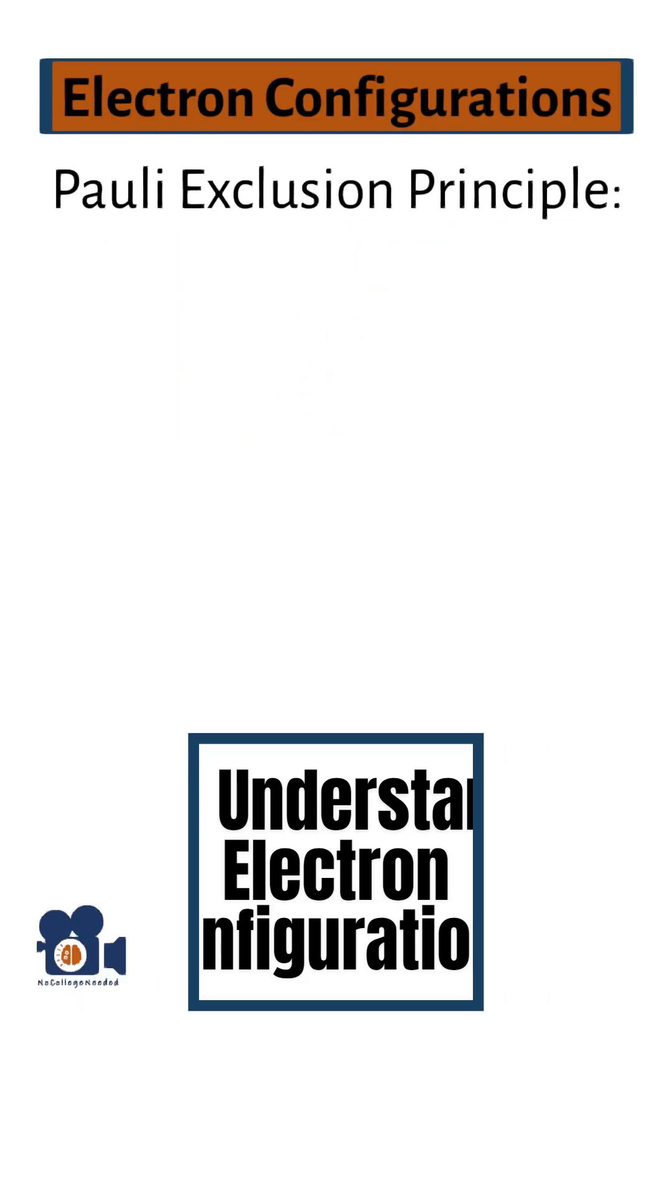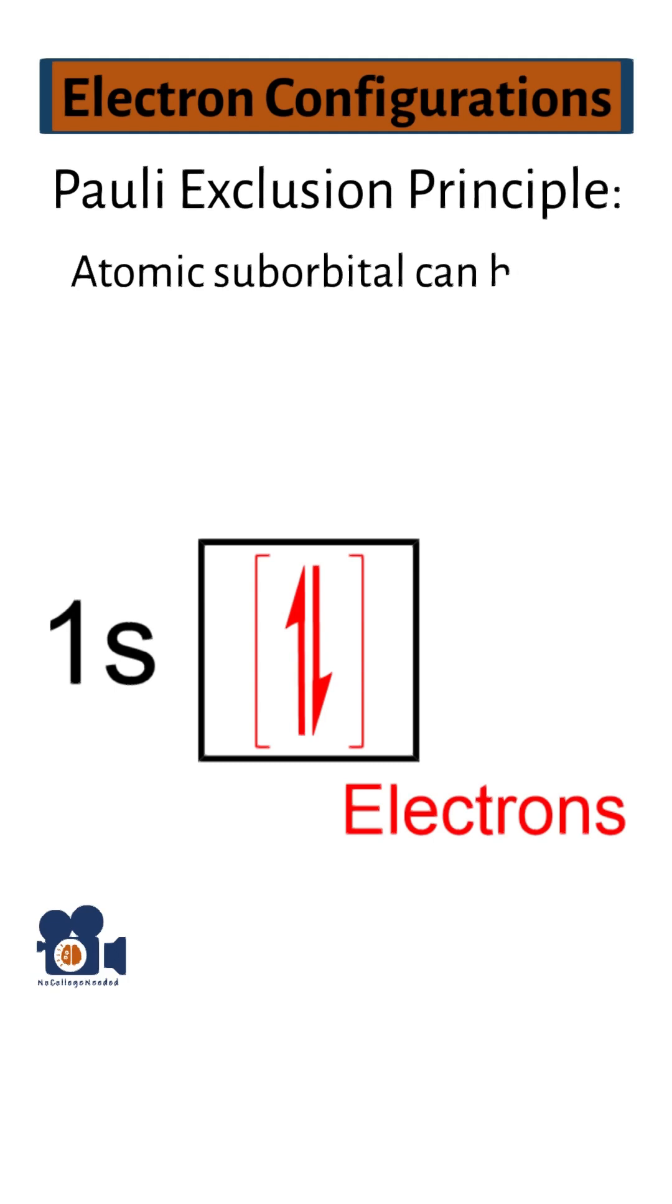We learned from the Pauli exclusion principle that an atomic suborbital can hold a maximum of two electrons and they must have opposite spins.